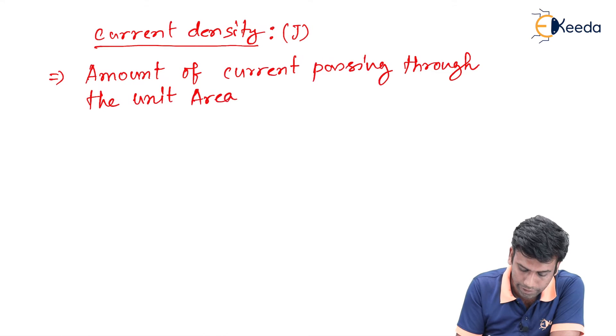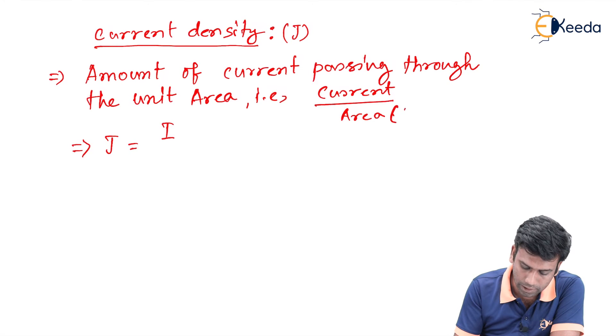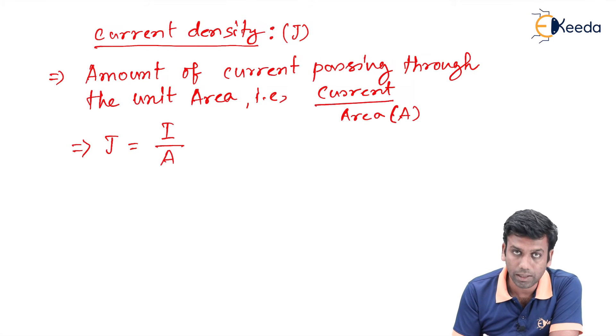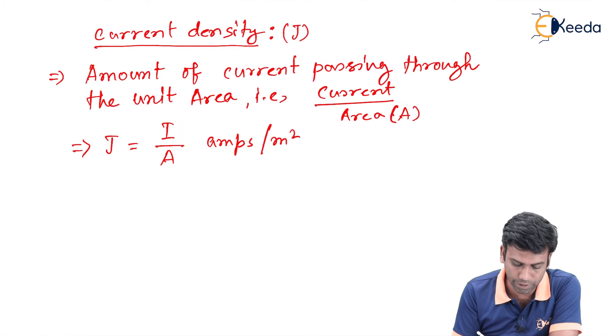That is, current per unit area. So in notation, we can write that J equals I, that is current, and if we denote the area as capital A, then it will be I by A. The units will be amperes per meter square or amperes per centimeter square.